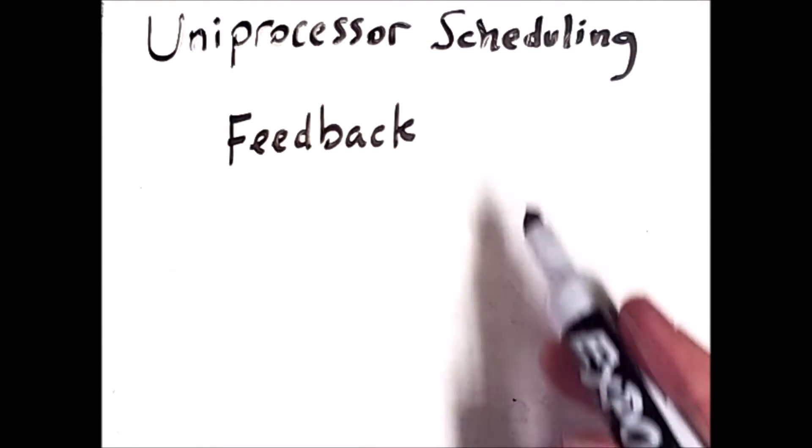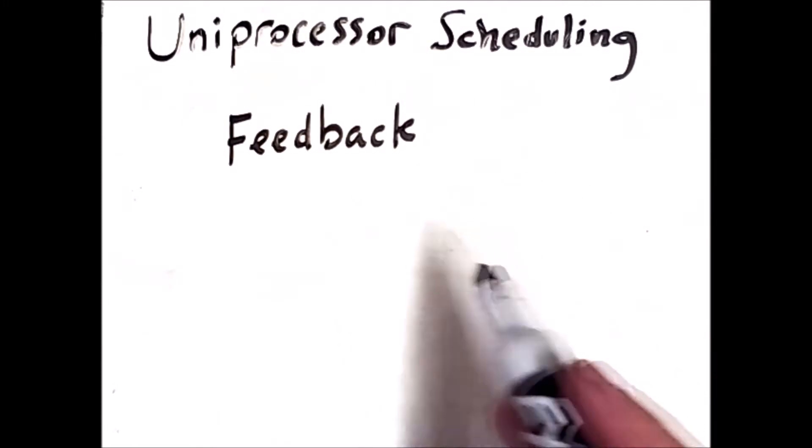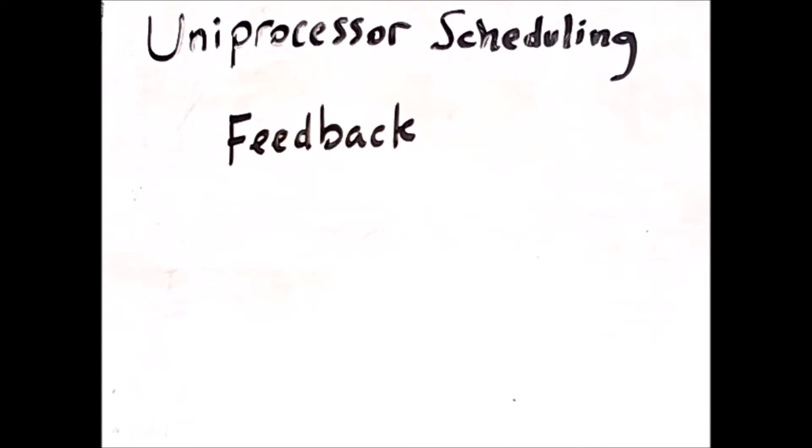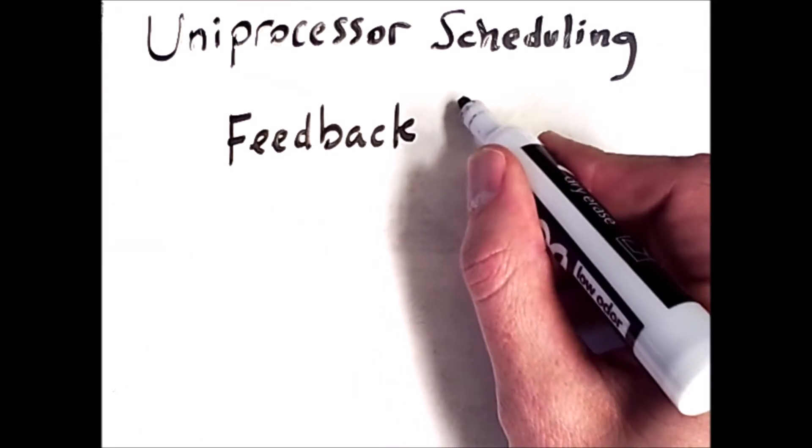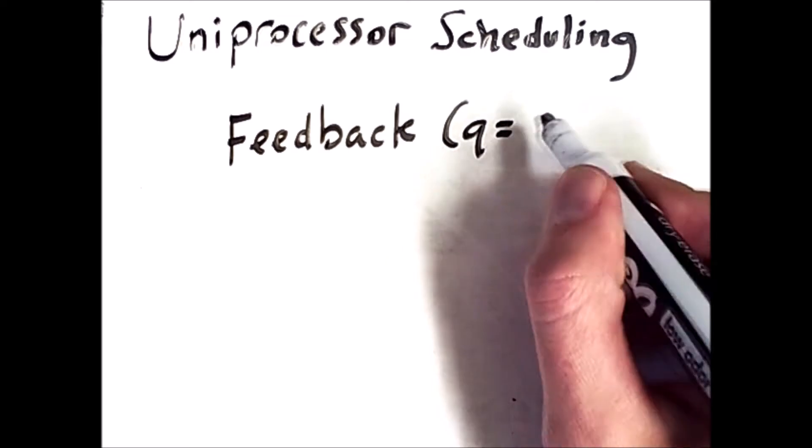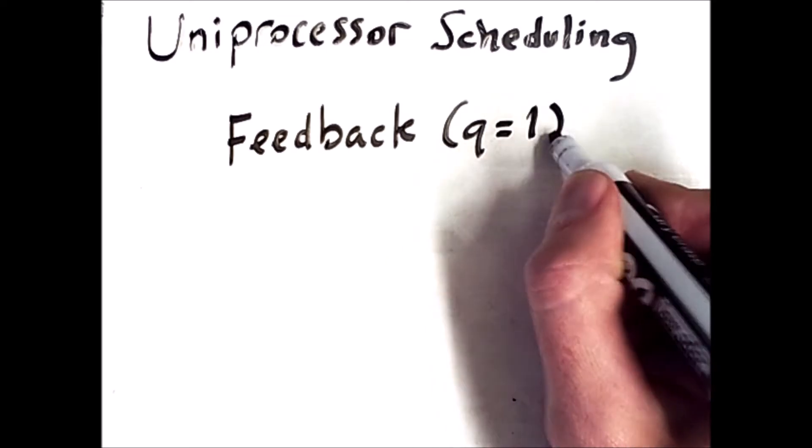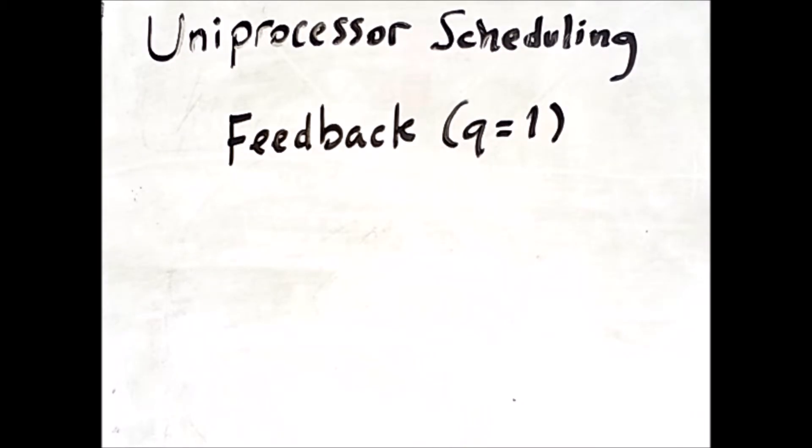The final uniprocessor scheduling algorithm I'll be discussing is feedback. Now feedback is fairly complicated and warrants a bit of explanation before we demonstrate it, but it is similar to round robin in that processes execute for some amount of time, and then once their time quantum expires, they get kicked off in favor of another process. So in the simple form of the feedback algorithm, we have a quantum that is simply some fixed number, like 1, which is similar to what we saw with round robin.